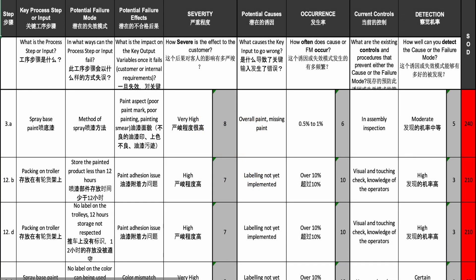Hi, this is an example of a process FMEA in a paint shop. They were painting wooden pots that would become toys. This is the typical way to analyze the sources of risks and the potential failure modes, and we went at it process step by process step.